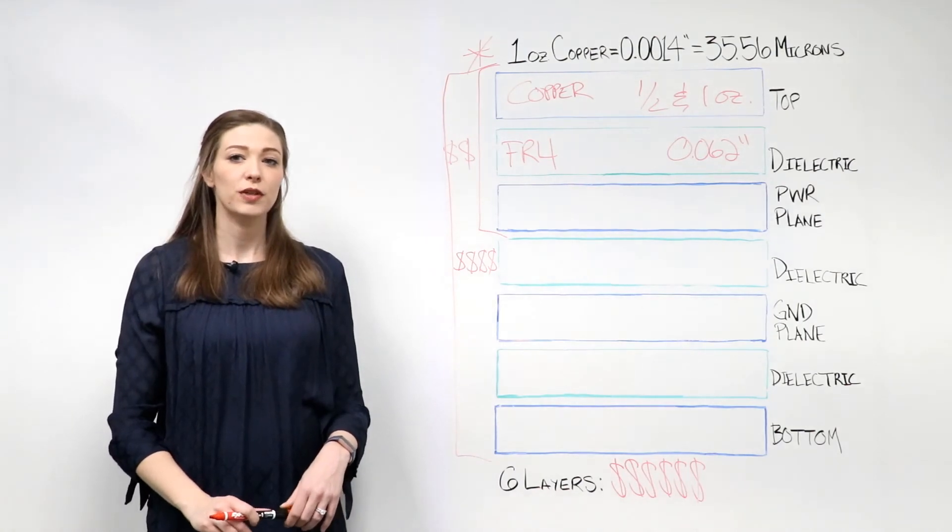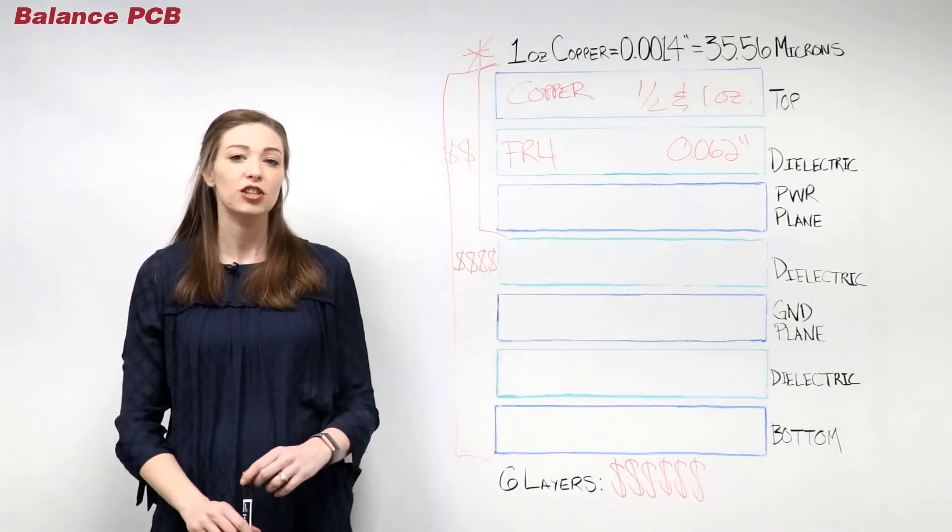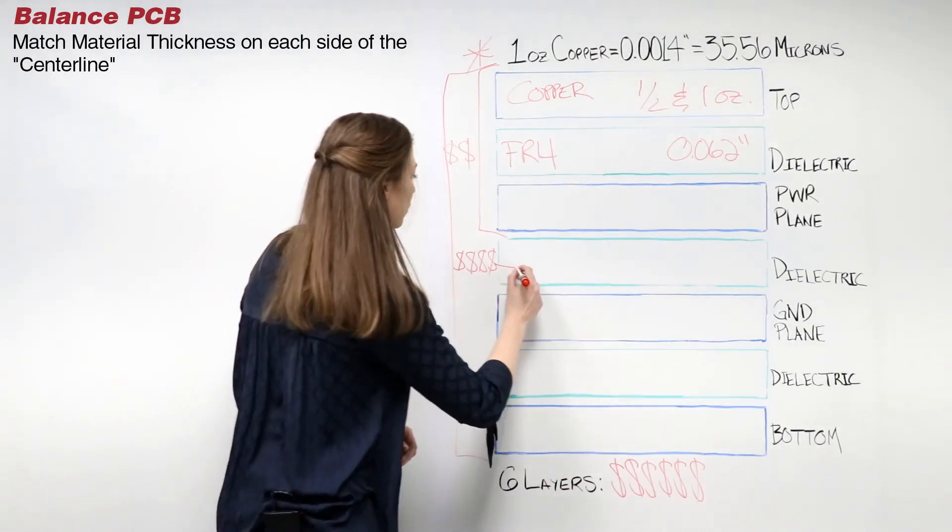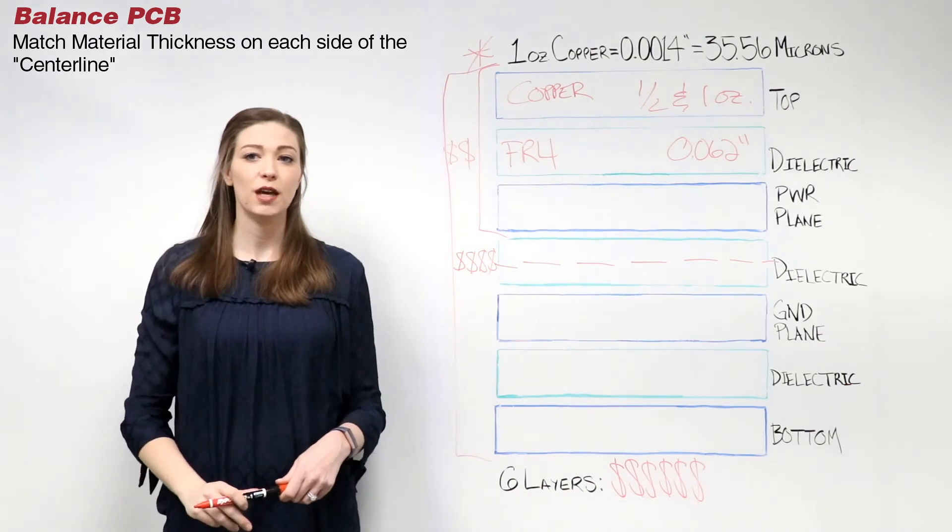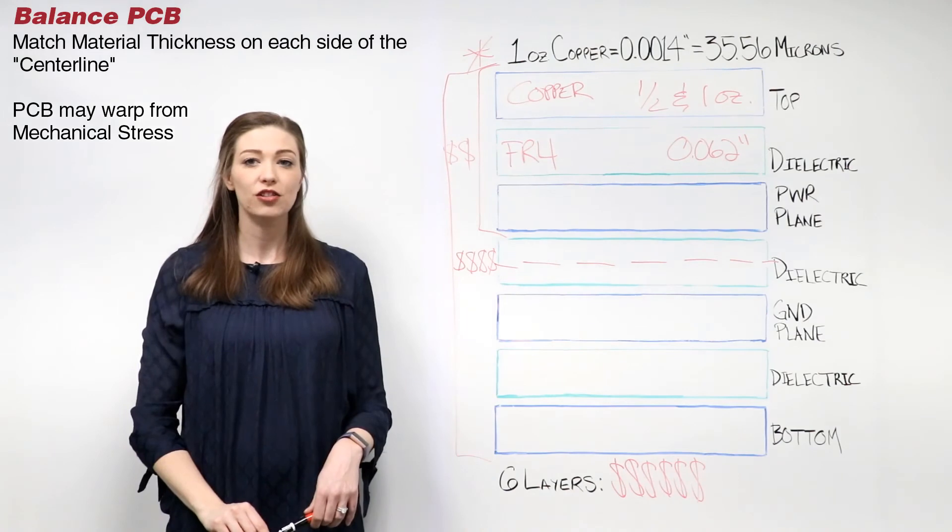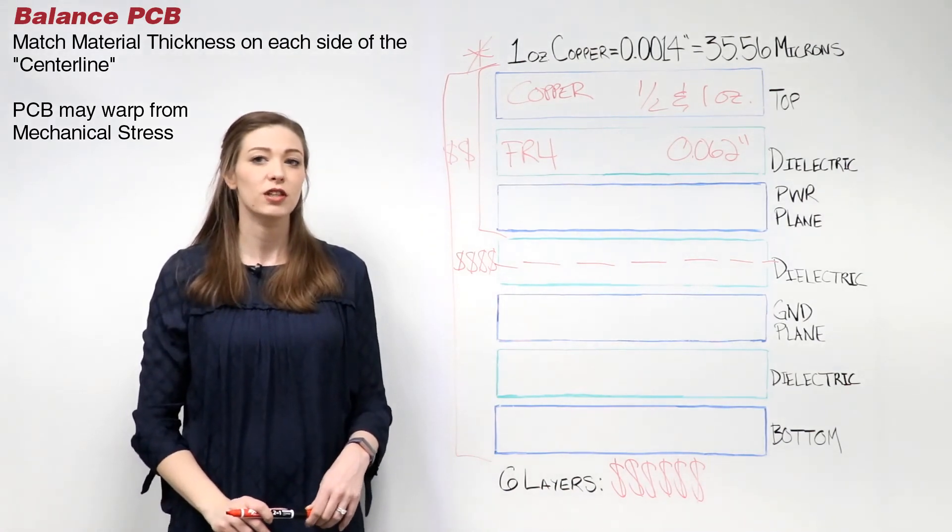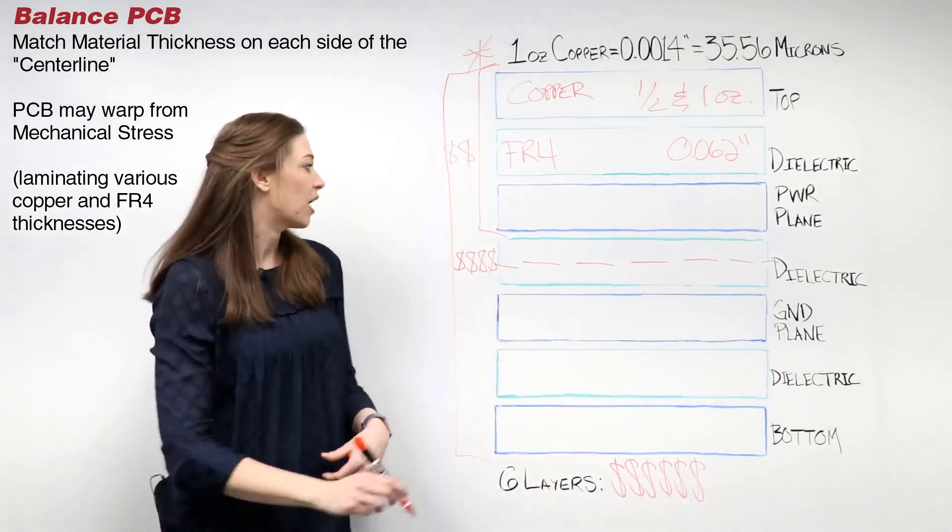It is important to make sure your PCB stack up is balanced. It is essential that materials on each side of the centerline match up. A PCB can become warped when mechanical stresses of the manufacturing process are not considered. Mechanical stress can build up when laminating dissimilar layers of copper with various thickness combinations of glass epoxy laminates.